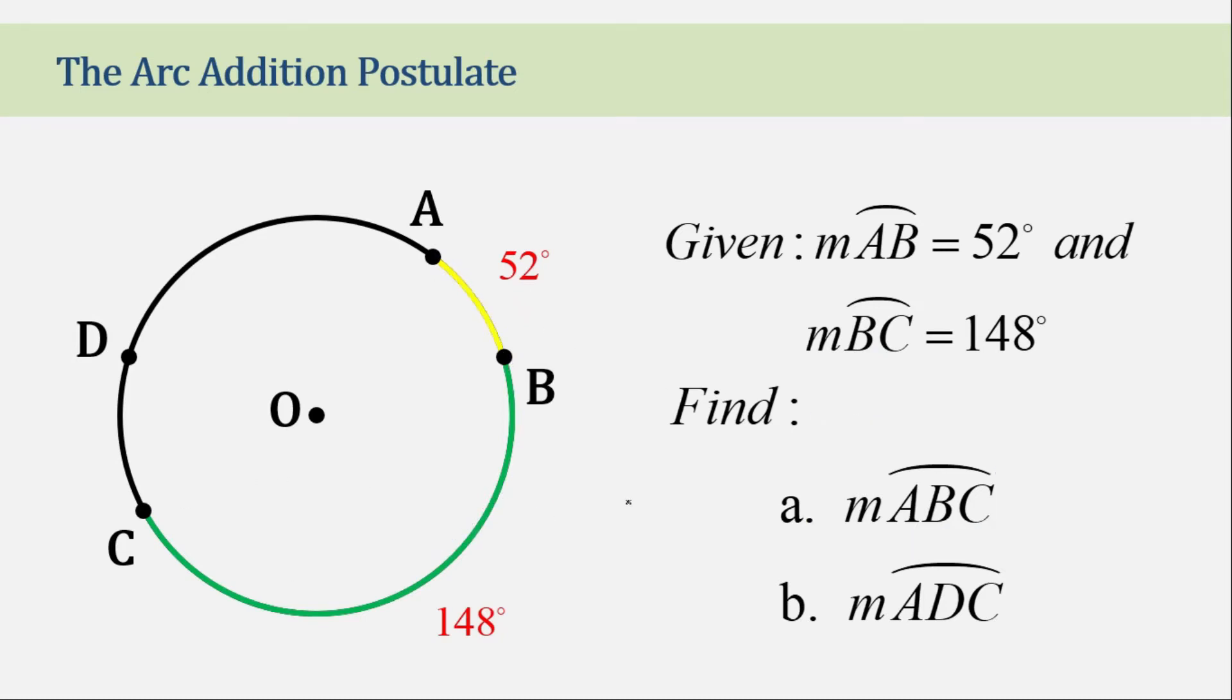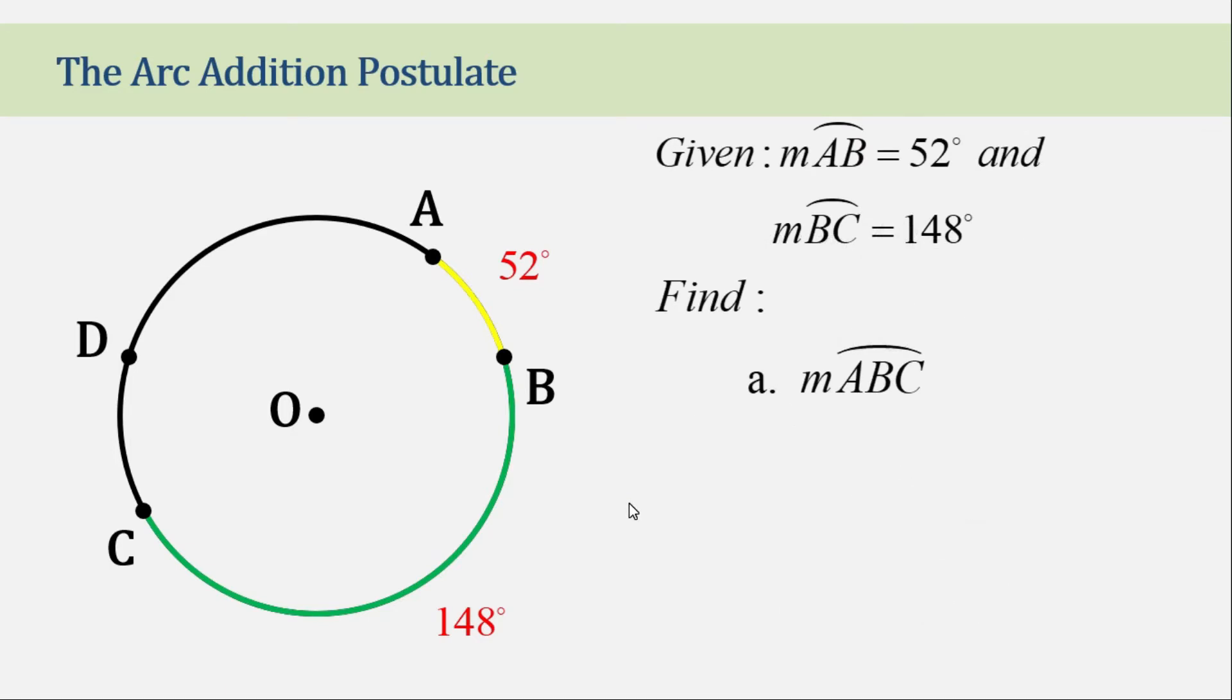Now by arc addition postulate, we can solve for the measurement of arc ABC by simply adding arc AB and arc BC. The thing is they are adjacent to each other.